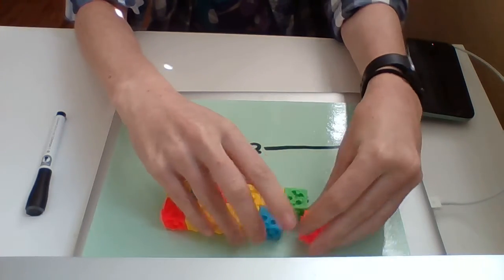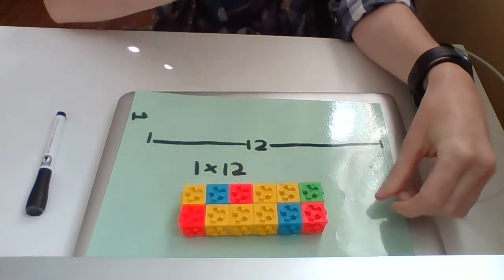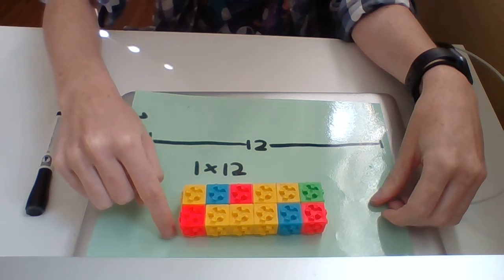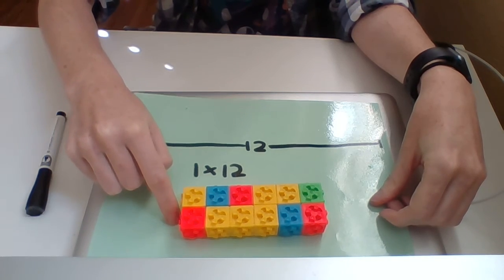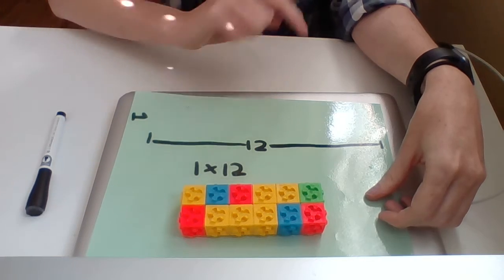So you need to make sure that it is equal on all sides, okay? And I want to see if you can figure out how wide it is and how long it is and write it out as an equation, just like I did.